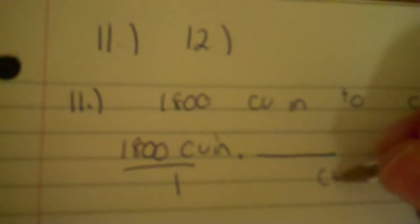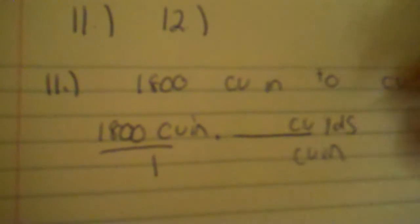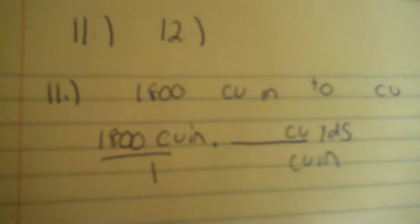So number 11, you got 1800 cubic inches to cubic yards. You're going to put your 1800 cubic inches over one and you're going to multiply that. So you got cubic inches, you put that diagonal, and then you got cubic yards on top.